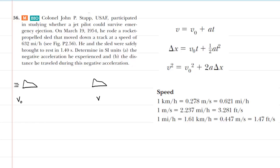In part A, we are asked to calculate the negative acceleration that this man experienced as his rocket-propelled sled moved down a track from an initial speed of 632 miles per hour to a final speed of 0 miles per hour.